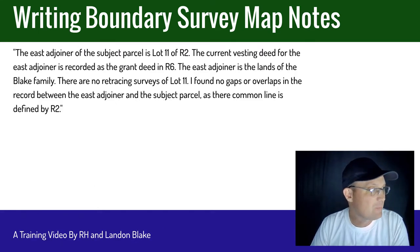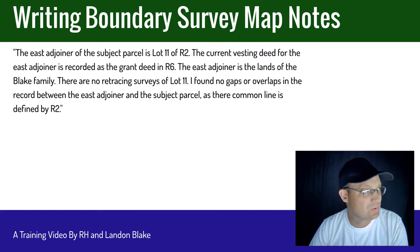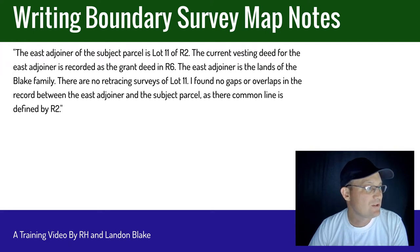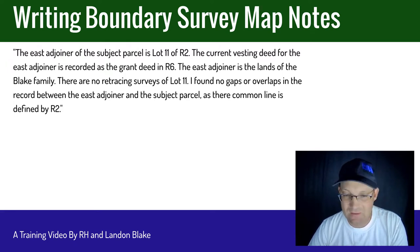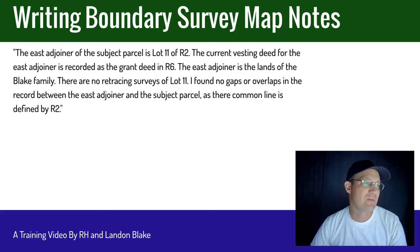Let's look at an example. The east adjoiner of the subject parcel is Lot 11 of R2 — that's the first element, identifying the relationship. The current vesting deed for the east adjoiner is recorded as the grant deed in Reference 6 — that's the source of title. The east adjoiner is the lands of the Blake family — that identifies the owner. There are no retracing surveys of Lot 11. And I found no gaps or overlaps in the record between the east adjoiner and the subject parcel as their common line is defined by R2.